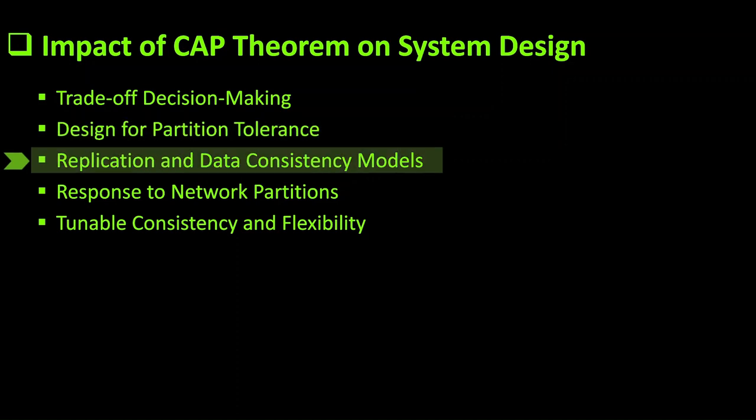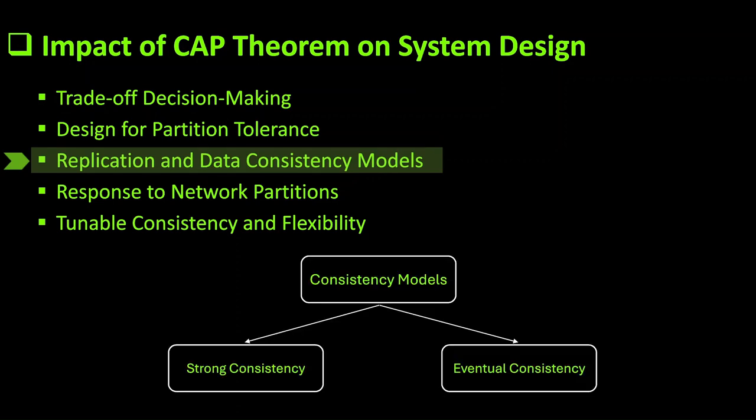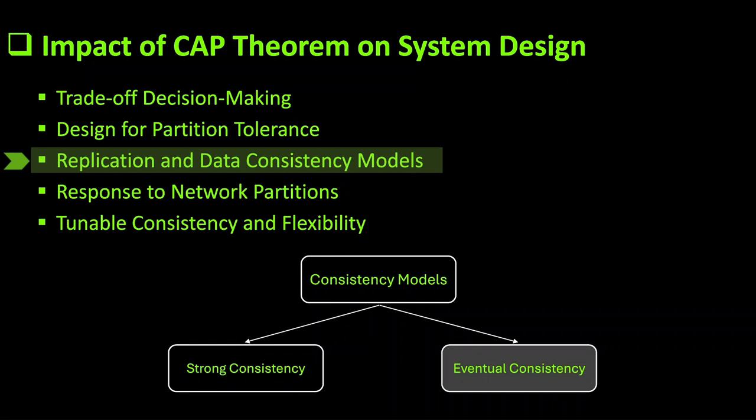Next is replication and data consistency models. Strong consistency ensures that all reads return the most recent write. This model is suitable for systems where data correctness is crucial but often involves more coordination and potential delays. Eventual consistency provides a weaker guarantee that, over time, all replicas will converge to the same value, allowing for better performance and availability at the cost of temporary inconsistencies.